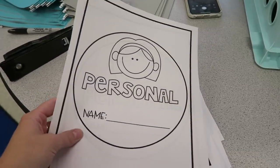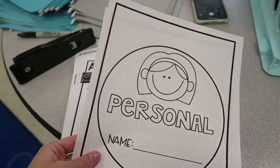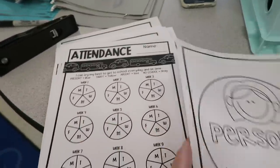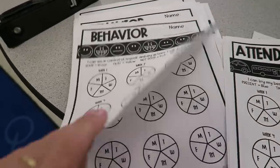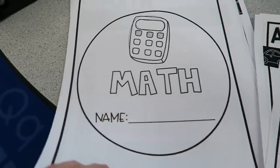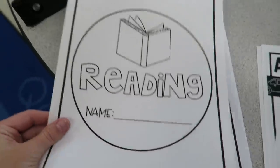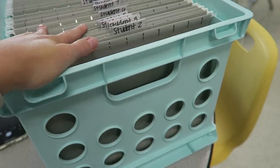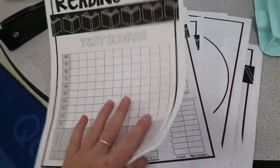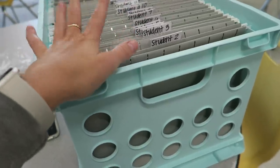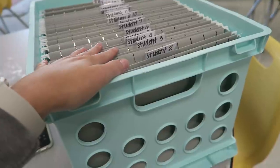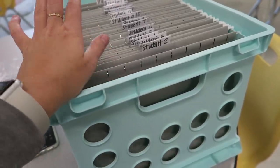There's a personal section with attendance and behavior and stuff like that. I have a math section with math test scores, and I will also have a reading section with data tracking how much they're reading and any test scores. The crate will be more like student information — any paperwork that I get on each of them or anything I want to keep on file for them.